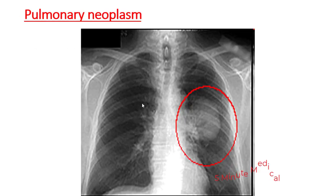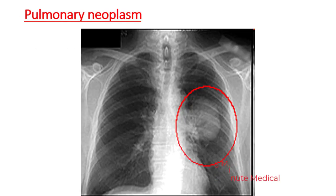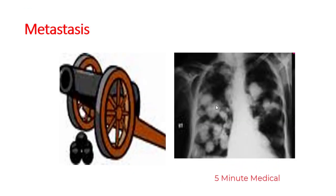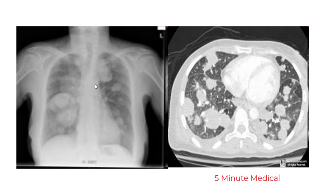Pulmonary neoplasm or bronchogenic carcinoma appears as a solid mass arising from the lung parenchyma. Lung metastasis is also known as cannon ball appearance — multiple round opacities in both lung fields, commonly from kidney cancer and other cancers that metastasize to the lung.